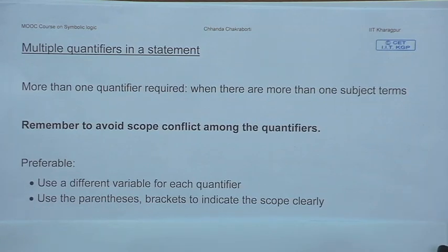So what did I say? First of all, you can use more than one quantifier in a proposition if the situation demands — that is not a problem. That situation is called the multiple quantifier situation. What you need to do is ensure that there is no scope conflict. To avoid scope conflict, my suggestion is to choose a fresh variable each time you are using a new quantifier, because each quantifier requires a variable. Or use the grouping procedures — brackets, parentheses, curly brackets — so that the scope of one quantifier is completely clear.